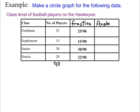Now we're ready to use the fraction to find the angle. 25 over 90 of the circle needs to be the angle for the freshman. There are 360 degrees in a circle, so I'm going to take 25 over 90 times 360 degrees. When I do that calculation I get 100 degrees.